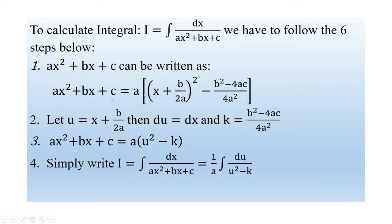You will see it is exactly the same. In step two, we let u = h + b/2a — meaning u equals this part of the expression — and then du will equal dh, because the derivative of the constant b/2a equals zero, leaving only dh. So du = dh.